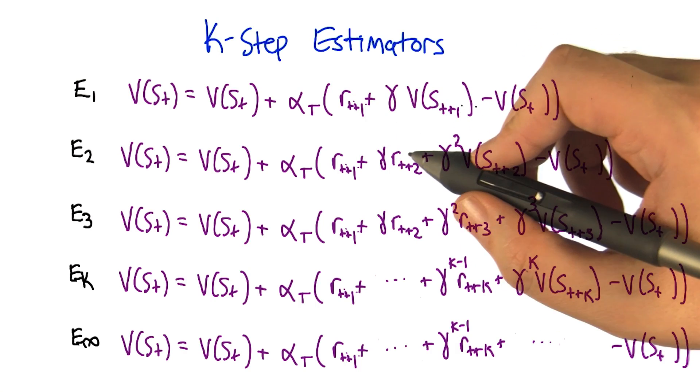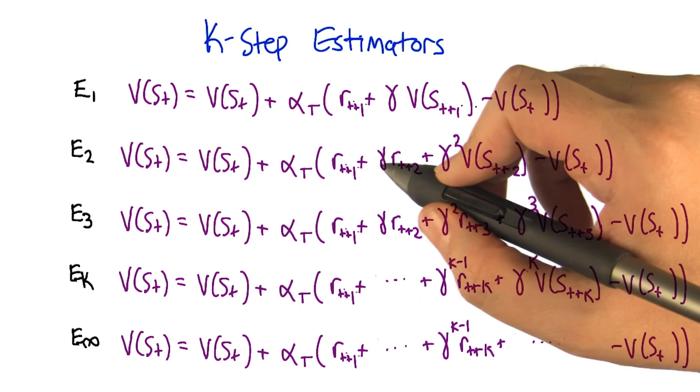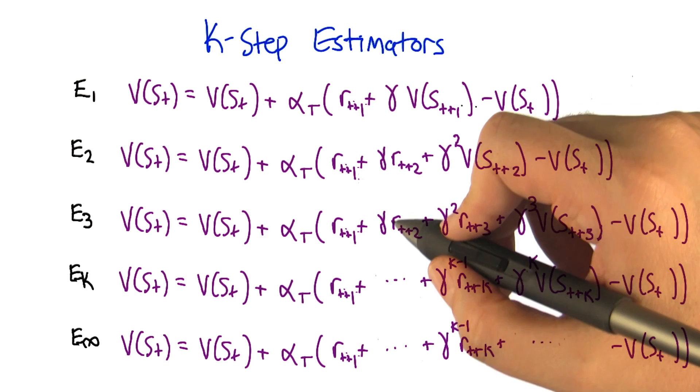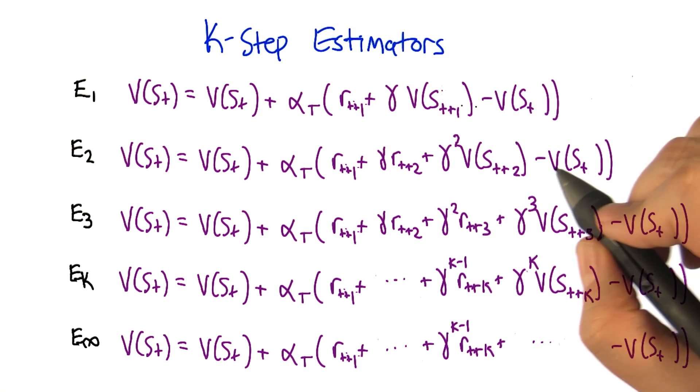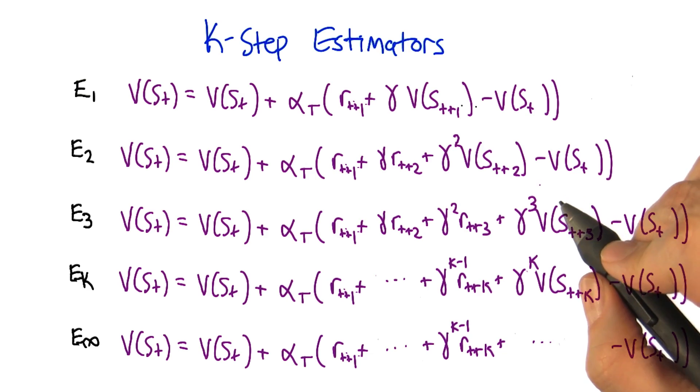So it turns out if we want to understand TD lambda, a really useful way of studying it is by studying not TD lambda. So in particular, we're going to look at k-step estimators for a moment, and then we're going to relate that back to TD lambda.